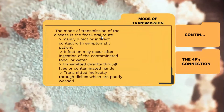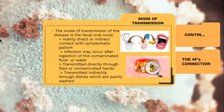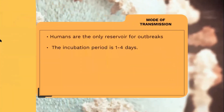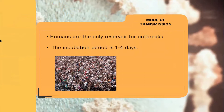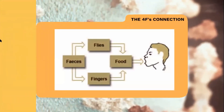The mode of transmission of the disease is fecal-oral. It is mainly direct or indirect contact with symptomatic patients. Infection may occur after ingestion of contaminated food or water, transmitted directly through flies or contaminated hands, and indirectly through dishes that are poorly washed. Humans are the only reservoir for outbreaks. The incubation period is short, normally one to four days only. The four F's connection shows how we get the condition through feces containing bacteria, transmitted to flies or dirty fingers, which can contaminate the food we eat.